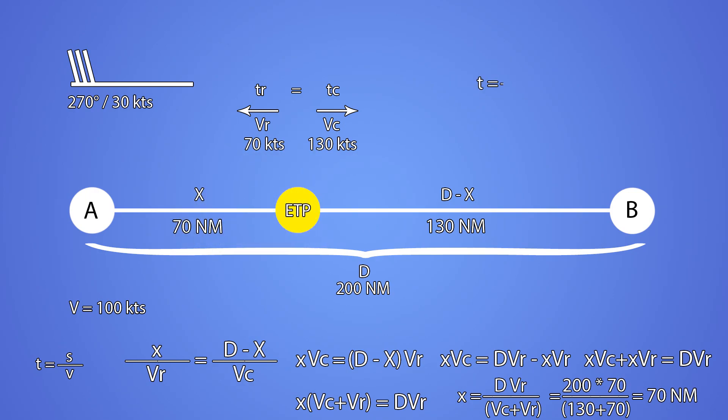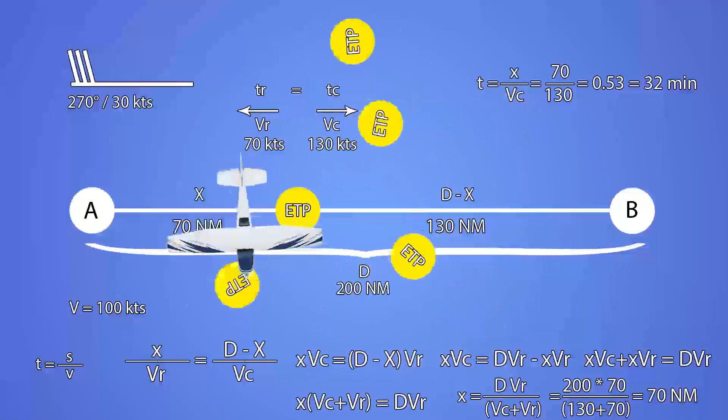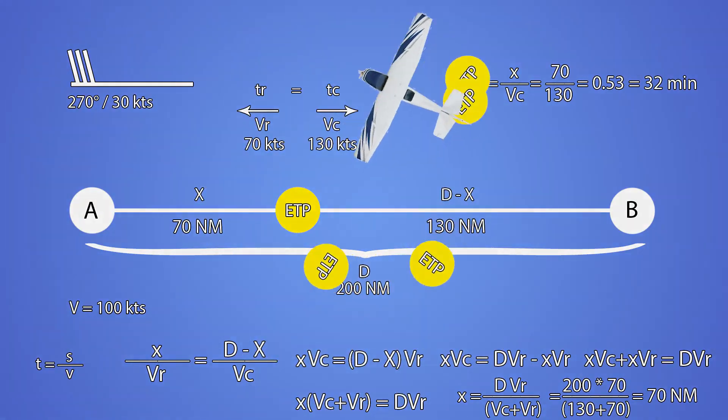Time to ETP is simply the distance to ETP divided by the outbound speed, 0.53 hours or approximately 32 minutes. Once again, thank you for watching and be aware of your position in the air.